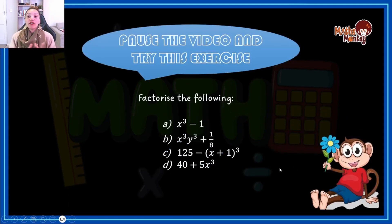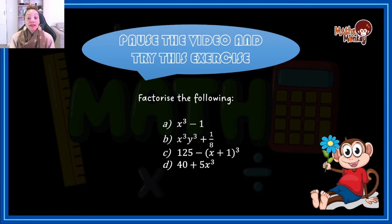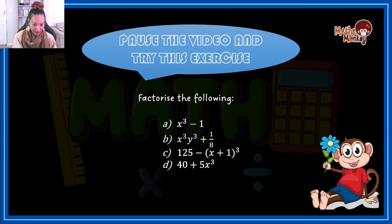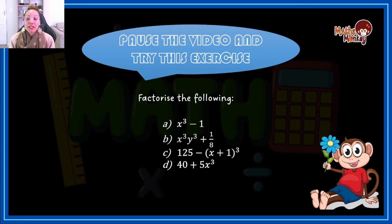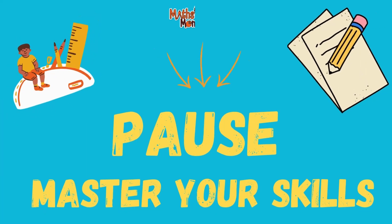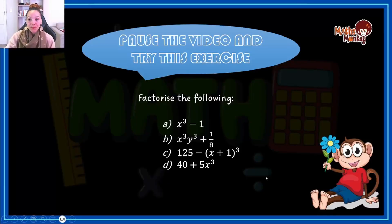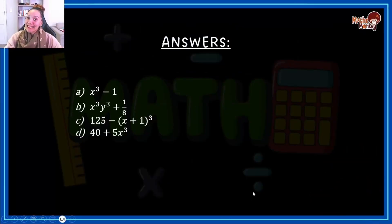I'll give you a little hint for part D: you have to first take out the highest common factor, and then factorize. That's the only hint I'm giving you. So pause the video now, and unpause when you are done.